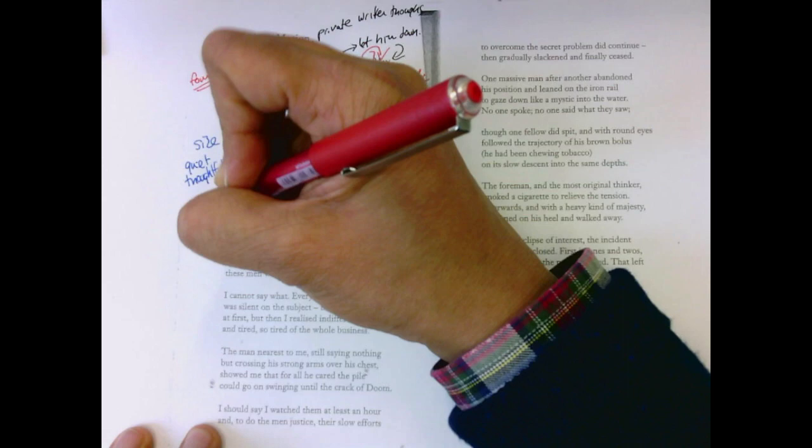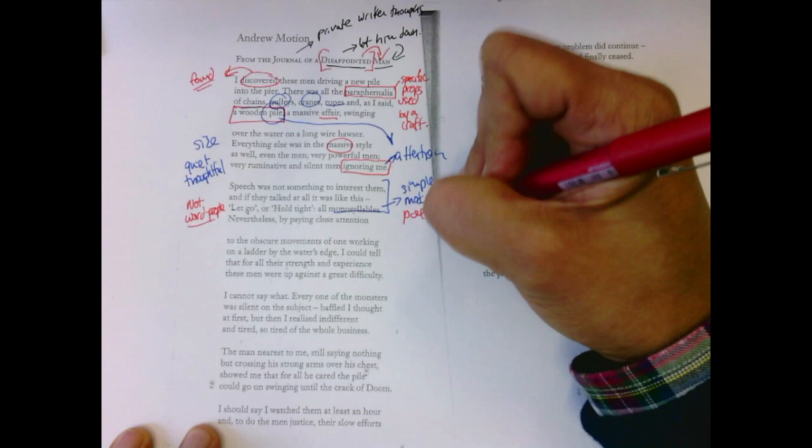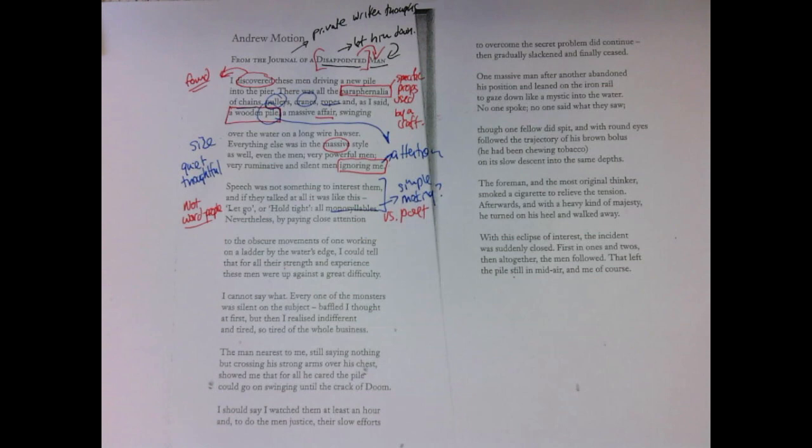The irony, of course, is he is a word person. He is a poet. He's someone who is trying to paint this picture in words. He's trying to make it simple, but he can't do it monosyllabically like they do.